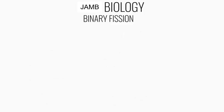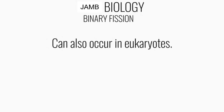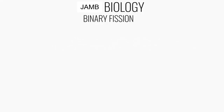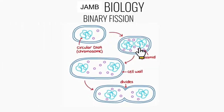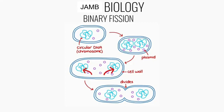Binary fission can also occur in eukaryotes, but for the purpose of this lesson we'll focus more on prokaryotic cells. The steps involved in this process are: first, the circular DNA and the plasmids replicate. After replication, the cell elongates, and then the DNA and the plasmids move to the opposite poles of the cell. The cytoplasm then starts to divide.